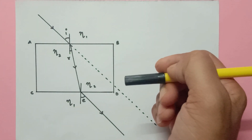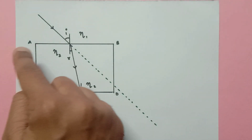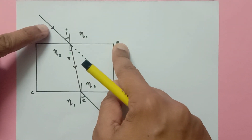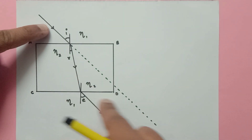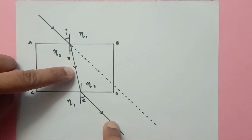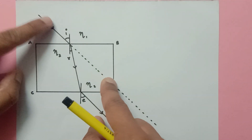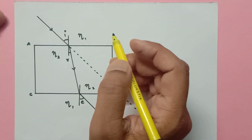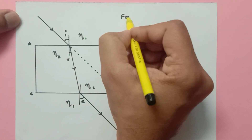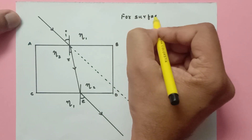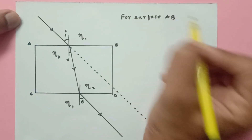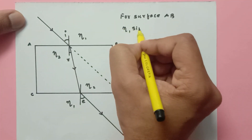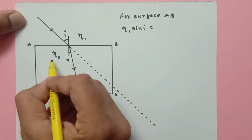Let us apply Snell's Law at surface AB. For surface AB, this is the incident ray and this is the refracted ray. Applying Snell's Law: eta 1 into sin i equals eta 2 into sin r. This is equation number one.